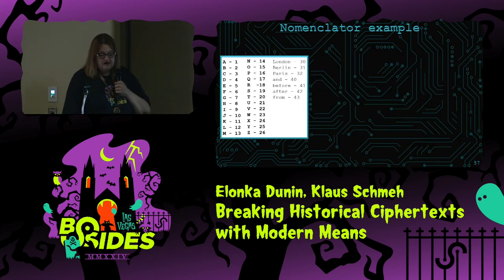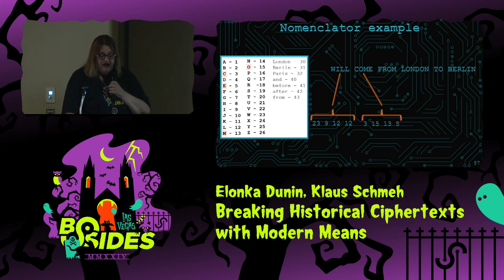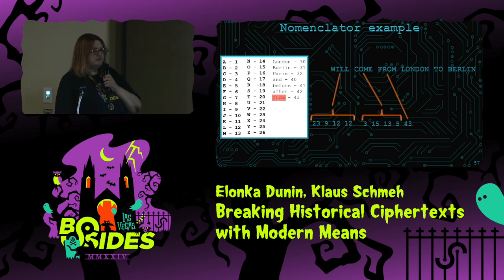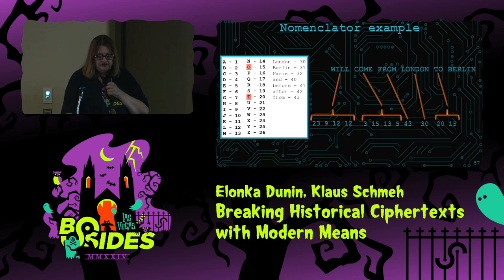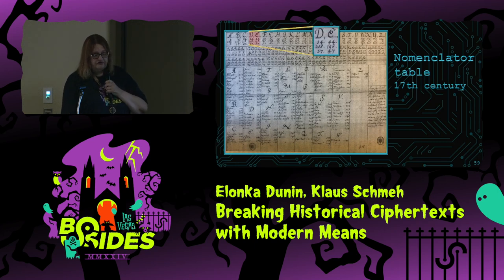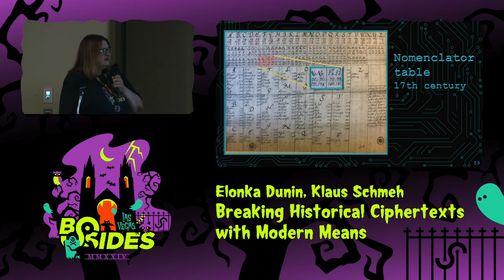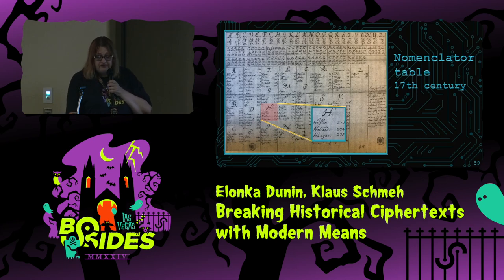Here is an example — not an actual nomenclator. Say we're going to encrypt the phrase 'will come from London to Berlin.' We use a table where some words are encrypted letter by letter, and sometimes, for example, the word 'from' is just two digits from the table. Then 'London' — two letters, done letter by letter. And 'Berlin' — just two digits. Here is an actual nomenclator table from the 17th century. Parts of it are just letters, and there are actually three different choices for each letter — what's called a homophonic option. There are also places where each letter is followed by possible vowels, giving different number options. Then you have actual names in the table with three digits.